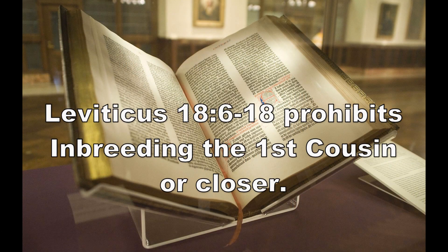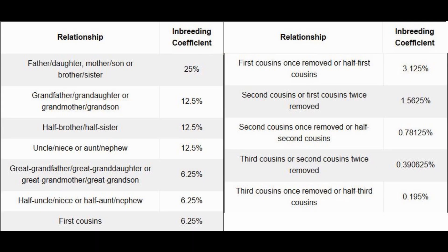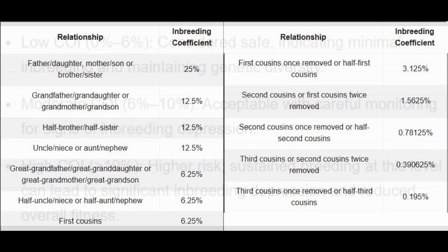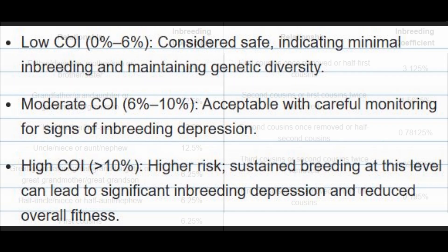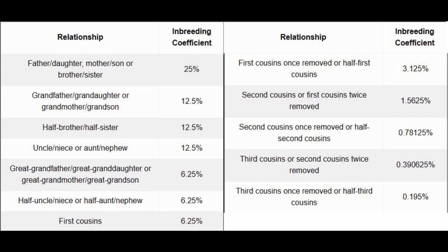In the Bible, Leviticus 18:6-18 prohibits the inbreeding of humans up to the first cousin or closer. So with humans, you have to have a coefficient of inbreeding less than 6.25%. What's generally acceptable with animals is anything under 6% coefficient of inbreeding. A moderate amount would be 6–10%, and a very high coefficient of inbreeding is 10% or greater. So while mating first cousins in animals may be somewhat acceptable, mating half-siblings is absolutely not.